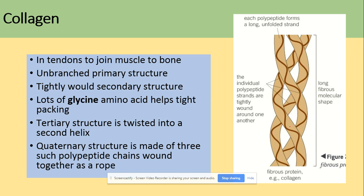Collagen is found in tendons, joining muscles to bones. It has an unbranched primary structure, a tightly wound secondary structure, and there is a lot of glycine amino acids which help to tighten the packing. The tertiary structure is twisted into a second helix, as we can see on the diagram. The quaternary structure comes from the fact that there are three polypeptide chains joined in that specific manner.